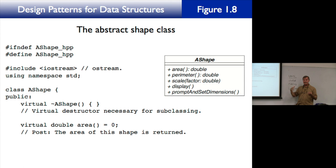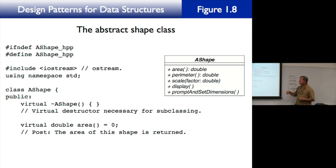The operations in the abstract shape include area, perimeter, scale, display, and promptAndSetDimensions. Area returns a double precision real because area is a real number. Perimeter also returns a double. The post condition for perimeter is: the perimeter of this shape is returned. Scale has a precondition: factor must be greater than zero. The post condition is: this shape's dimensions are multiplied by factor.